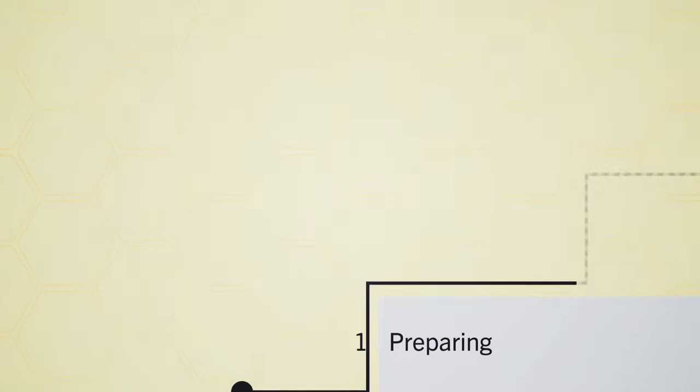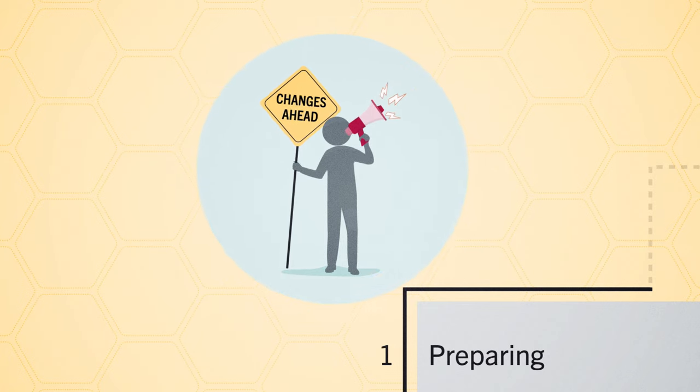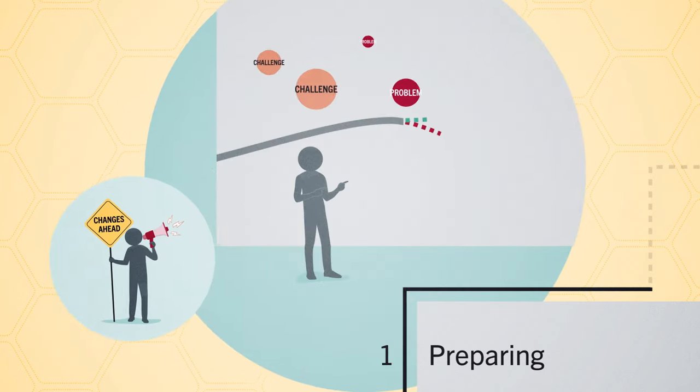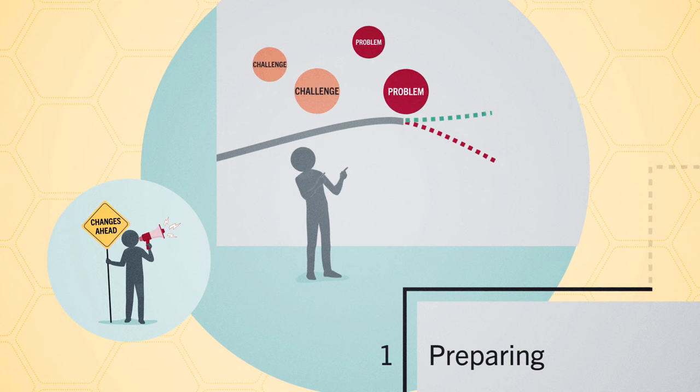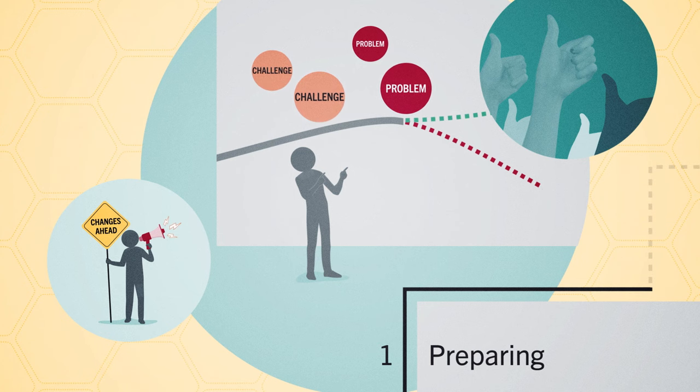Step one is preparing for change. In the preparation phase, the manager helps employees recognize and understand the need for change. They raise awareness of the challenges or problems driving the change. Gaining initial buy-in from employees can help reduce friction and resistance later on.